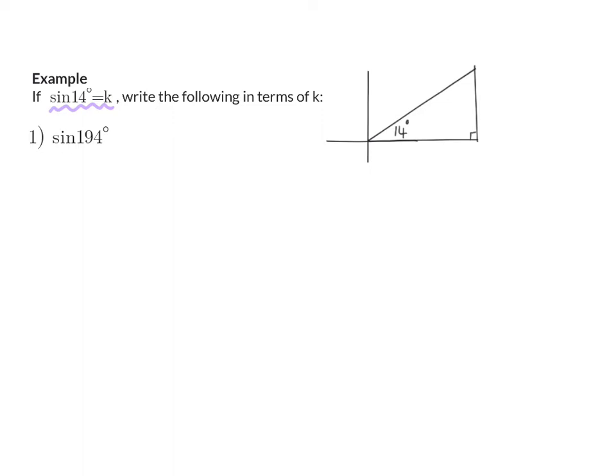To complete our triangle, we need side lengths. I'm focusing on the information that was given. Sin of 14 is the ratio k, or k over 1. We know that sin is the ratio opposite over hypotenuse. Opposite and hypotenuse will then be k over 1. And then we can calculate our adjacent side using Pythagoras. The adjacent side is the square root of 1 minus k squared.